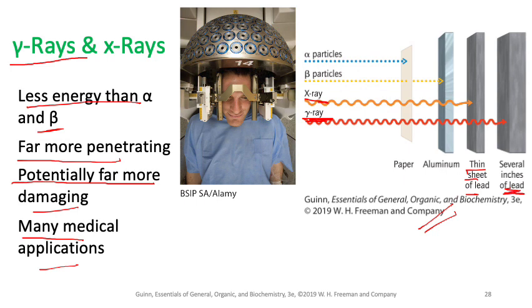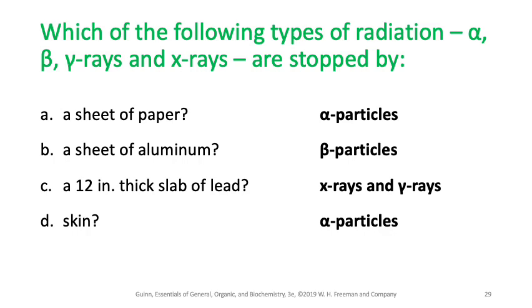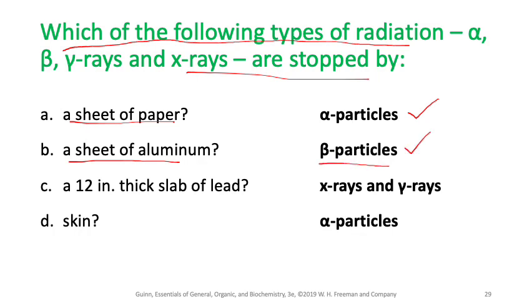To summarize penetration: paper stops alpha particles; aluminum stops beta particles; a thin lead sheet stops X-rays; several inches of lead are needed for gamma rays. For example, which radiation is stopped by a sheet of paper? Alpha particles — because of their large size. That covers this chapter. Make sure to read the textbook and follow along with the video.